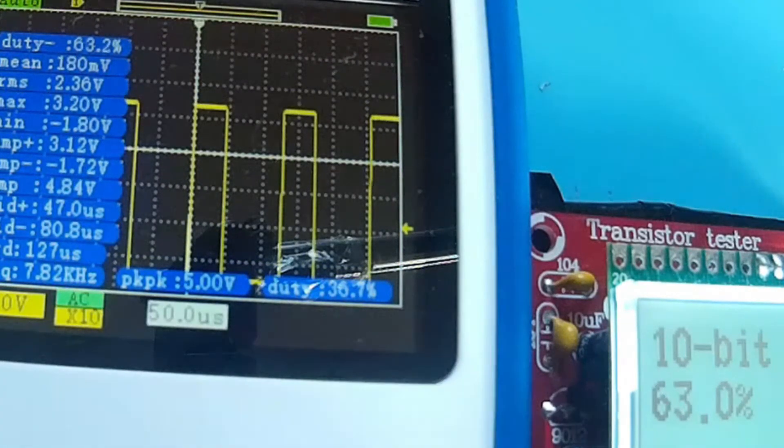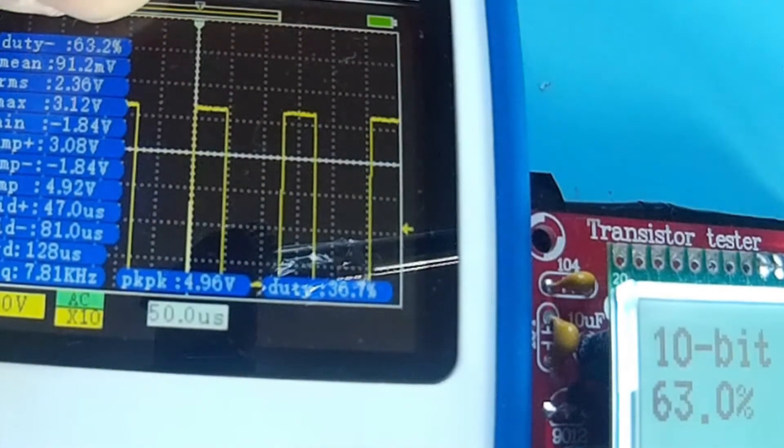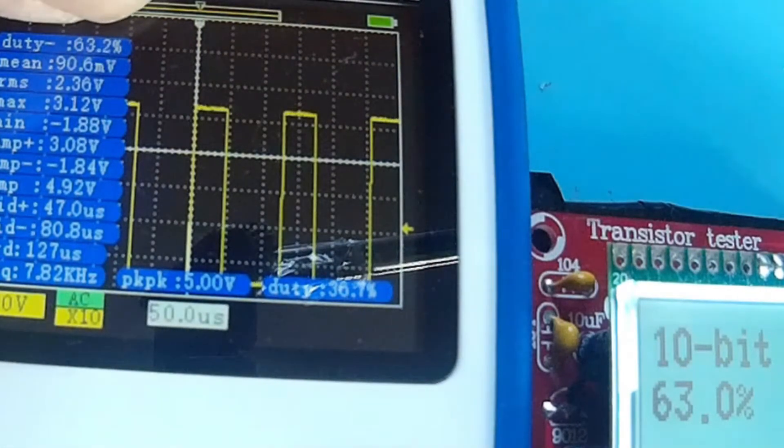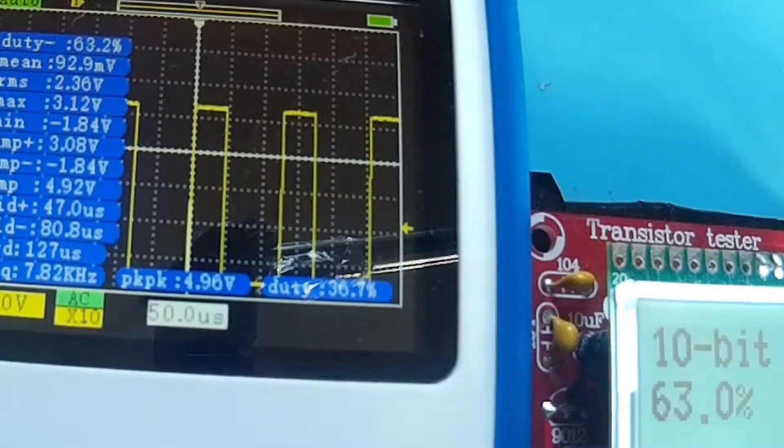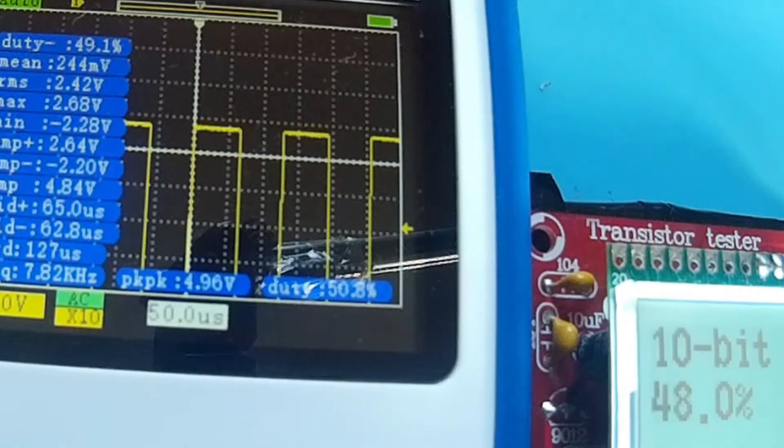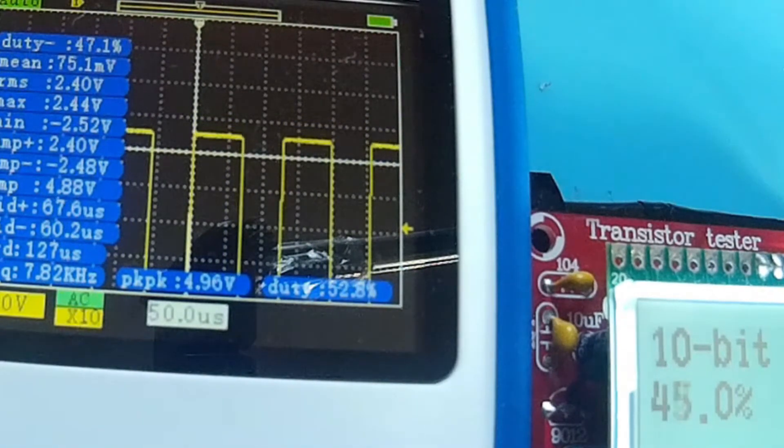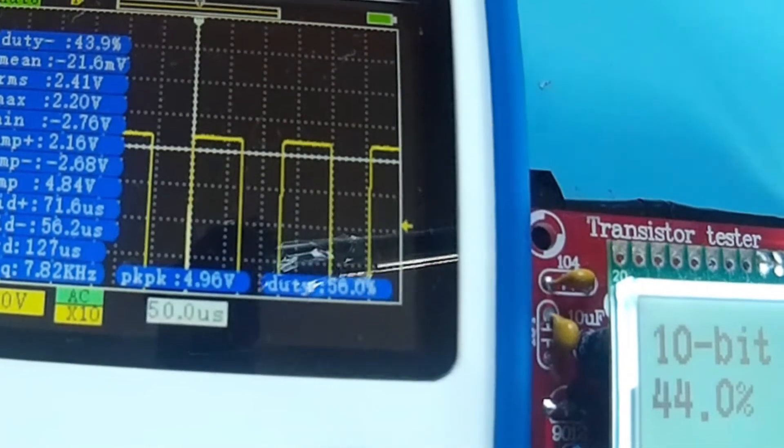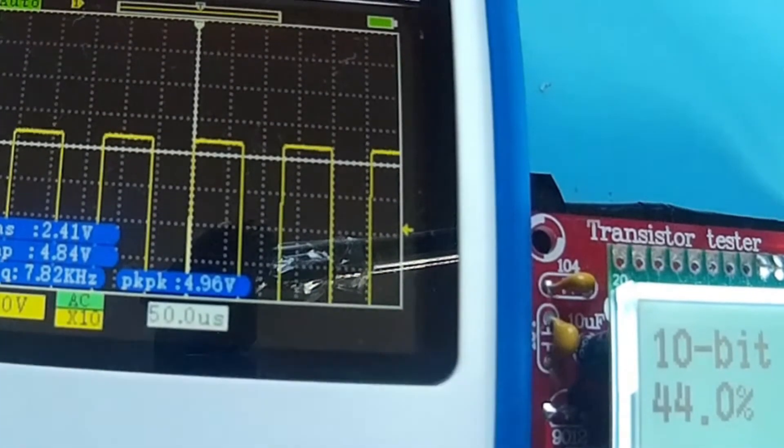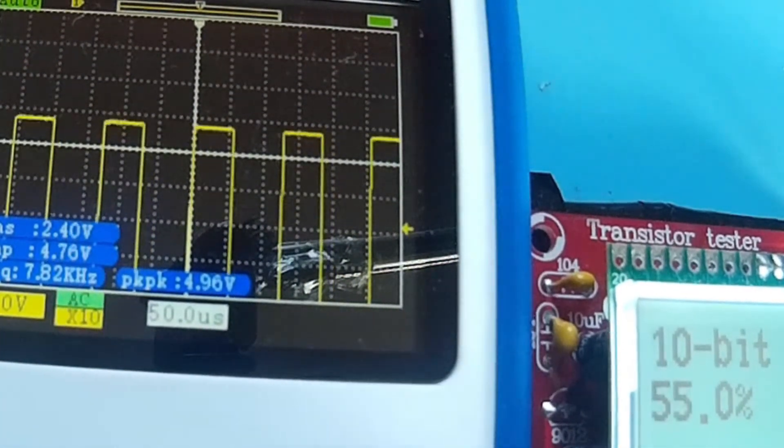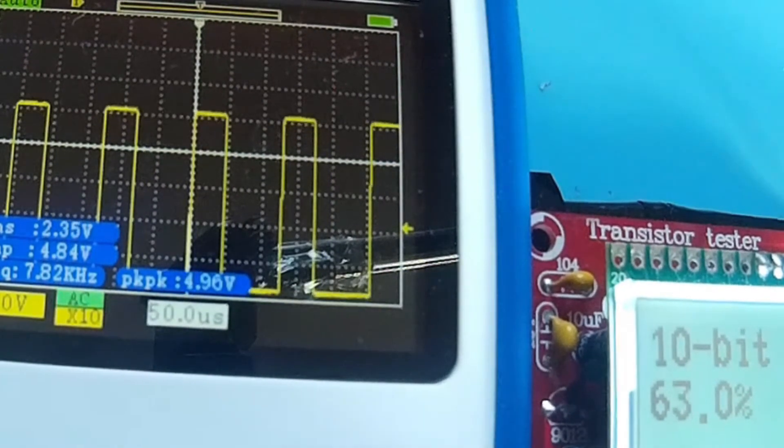You see, so I have 73% there, and here we have 63% over here. And here we have the same 63.2%, so it's measuring the duty cycle very nice. The frequency is 7.8 kilohertz. And we have an RMS voltage of 2.4 volts.